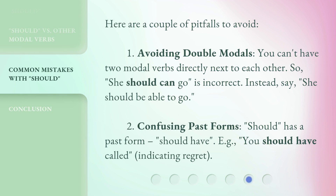Here are a couple of pitfalls to avoid. 1. Avoiding double modals — you can't have two modal verbs directly next to each other. So 'she should can go' is incorrect. Instead, say 'she should be able to go.' 2. Confusing past forms — should has a past form: should have. E.g., 'You should have called,' indicating regret.